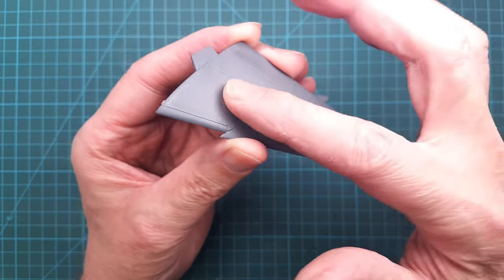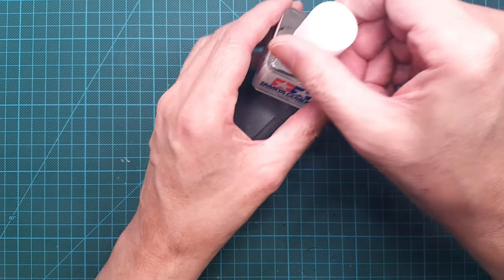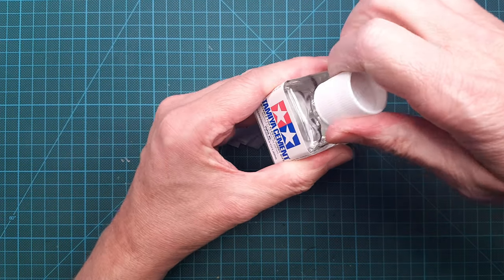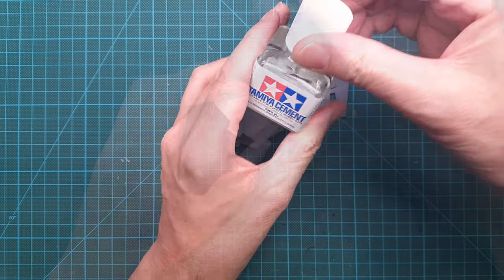Anyway, I will reuse one of the main wing sections for this exercise. So, let's start by gluing the main wing parts together.